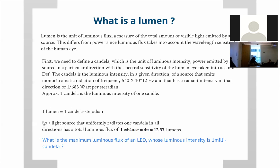One lumen equals one candela multiplied by one steradian. Candela is intensity — it's per unit solid angle — whereas a lumen integrates over all solid angles. For example, a light source uniformly emitting one candela in all directions has a total luminous flux of 1 cd × 4π steradians ≈ 12.57 lumens, since the total solid angle of a sphere is 4π steradians.